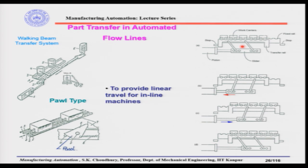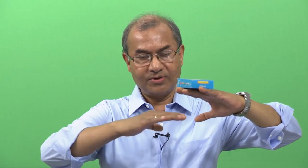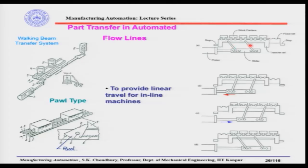This system is called the walking beam system — as if it is walking. This is the fixed rail; on the fixed rail you have the work carrier, and this is the transfer rail which is doing this motion because of the links here. Those links are fixed on the slider of this piston and the cylinder. When the piston goes to and fro, because of the link, this transfer rail will make a semicircular movement.